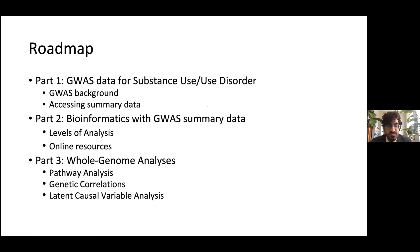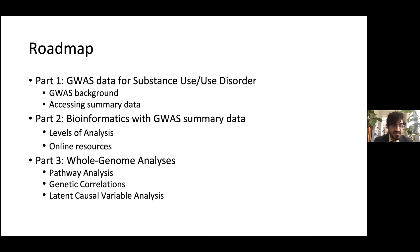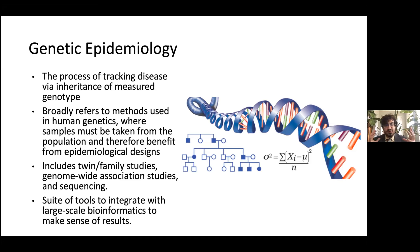As a roadmap, we'll start by talking about genome-wide association studies — particularly of substance use and use disorders — and give background on GWAS, summary statistics, and where to find them. Next, we'll cover bioinformatic approaches using GWAS summary data, focusing on analyses you can do online. Finally, we'll go to the whole-genome level and discuss genetic correlations and latent causal variable analysis, examining how phenotypes relate to one another.